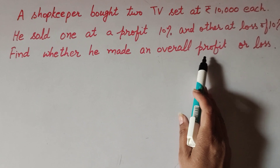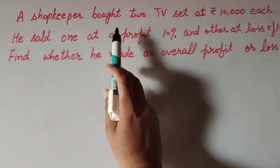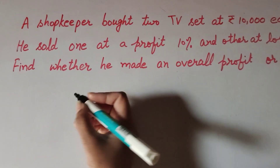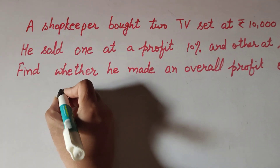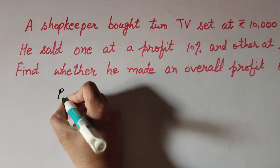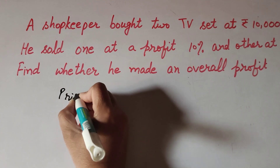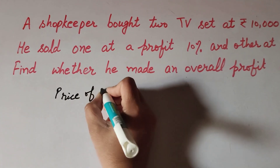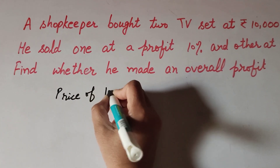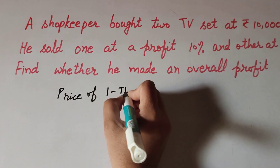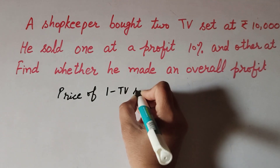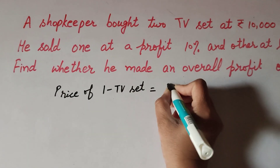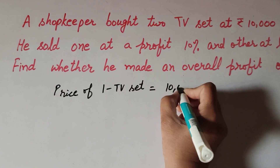The shopkeeper buys two TV sets at 10,000 each. So the cost price of one TV set is equal to rupees ten thousand.